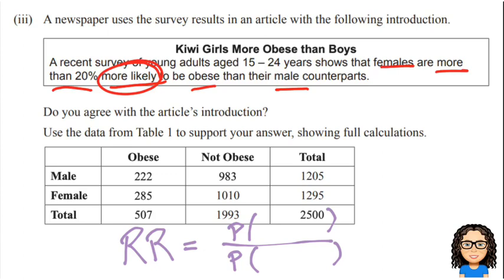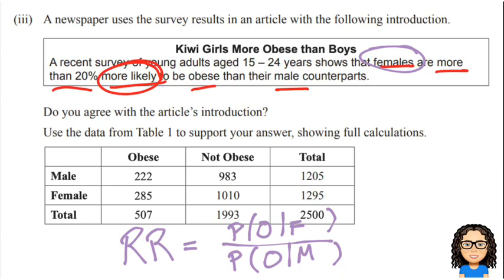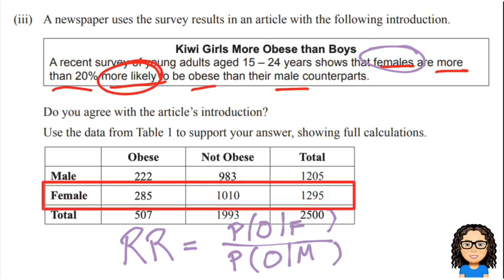The question talks about females being more likely to be obese, so I want to find the probability of being obese given female, divided by the probability of being obese given male. Let me write that here: P(obese | female) ÷ P(obese | male).